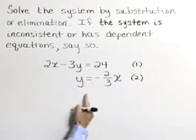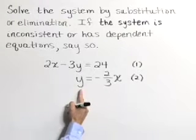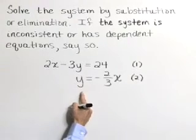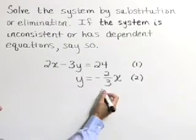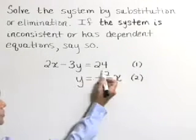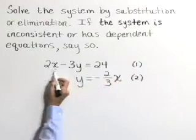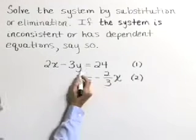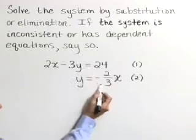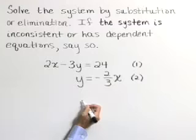This is a perfect setup for using substitution because we have a variable y already isolated or solved for. So we're going to take equation 2 and substitute it into equation 1 right here for y. We're going to replace that y with negative 2 thirds x. Here we go.